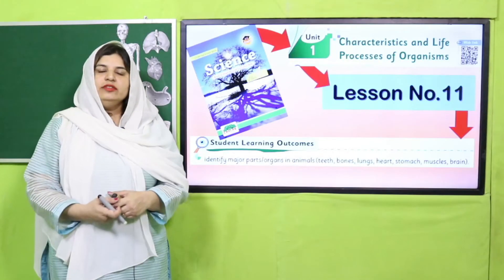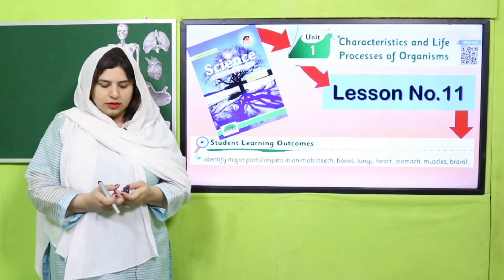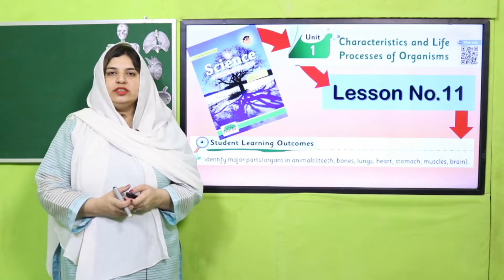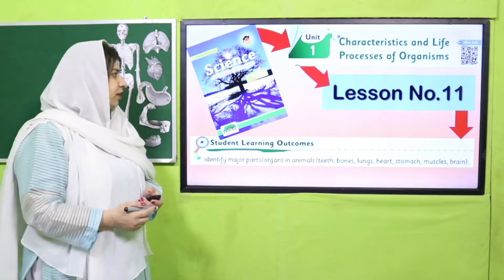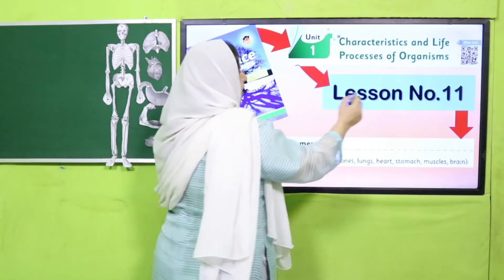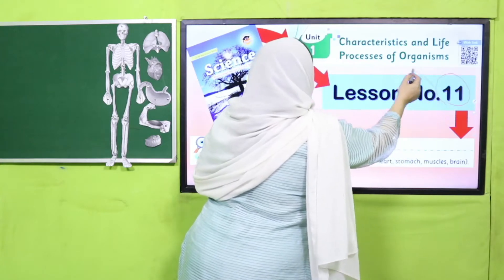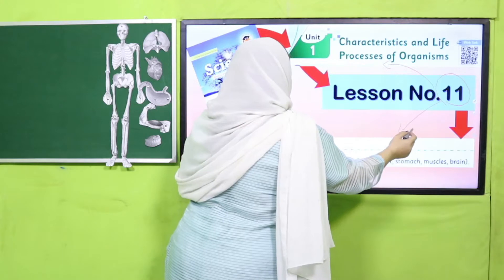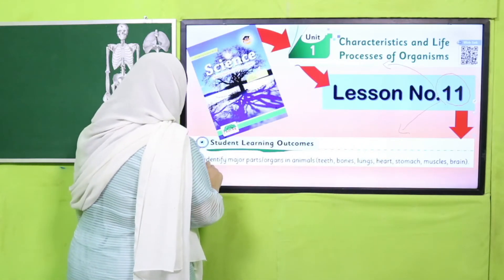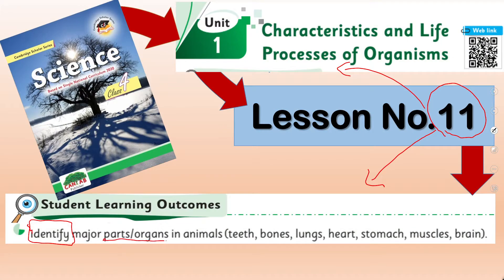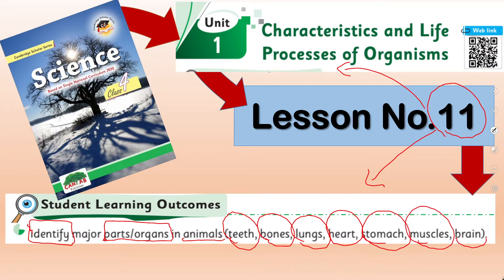Bismillahirrahmanirrahim, Assalamu Alaikum. Welcome to the video session of Kenta Publishers. We are going to study our Cabinet Scholar Series, Science Grade 4. Today we are going to start lesson number 11 of chapter number 1. In today's lesson, the SLO we are going to address is identifying major body organs of animals — teeth, bones, lungs, heart, stomach, muscles, and brain.